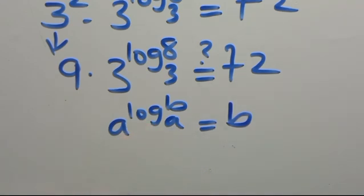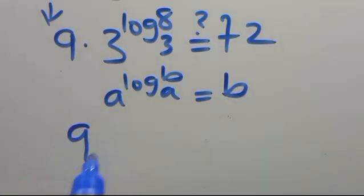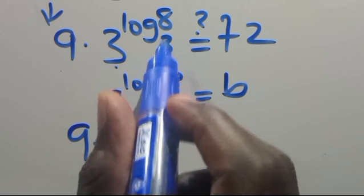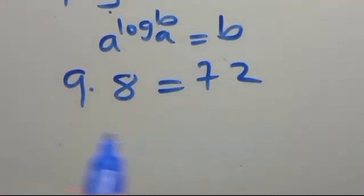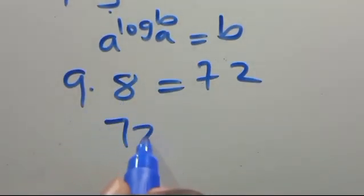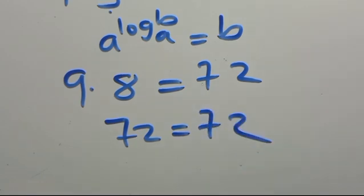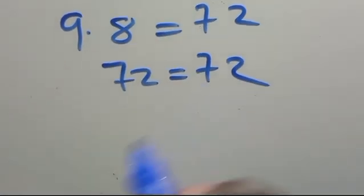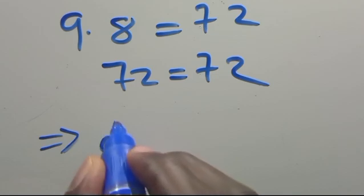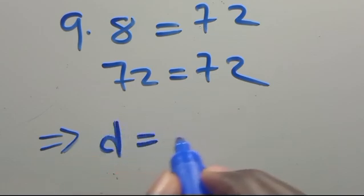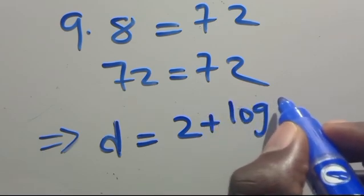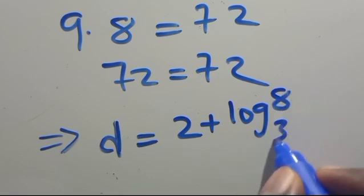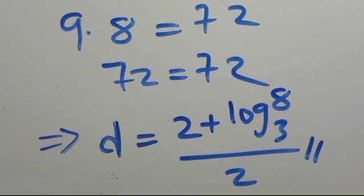Since the base and the log base are the same, the output is 8. So we have 9 times 8 equals 72. Since the left-hand side equals the right-hand side, this confirms that D equals 2 plus log 8 base 3 all over 3, and it is satisfied.